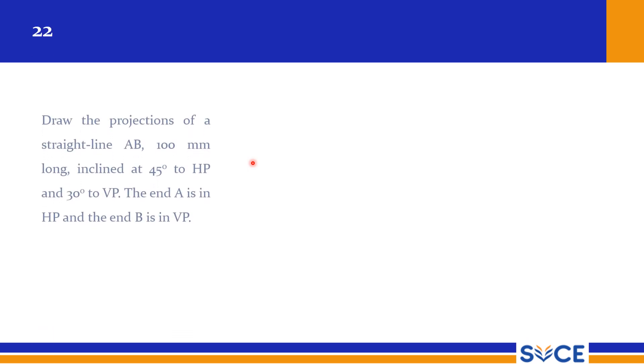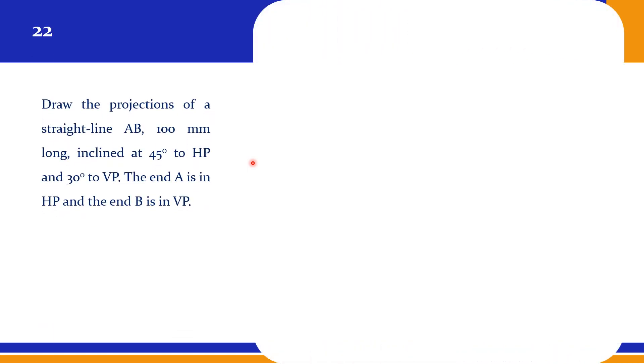Students, now we will see one more typical type of problem in line cases. This is the problem where one end is in HP and another end is in VP. This is a very simple kind of problem where you can try the rotating line method.